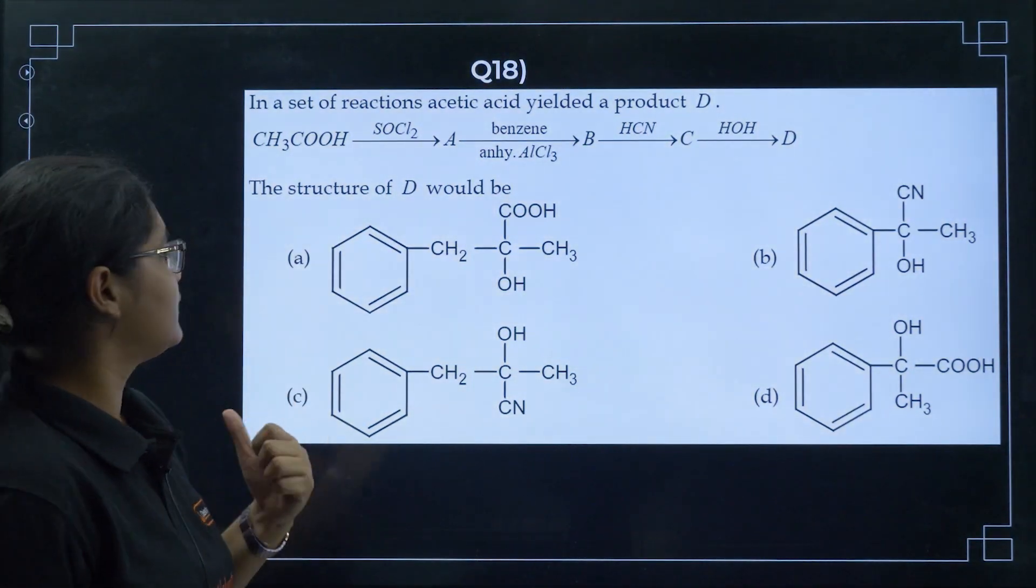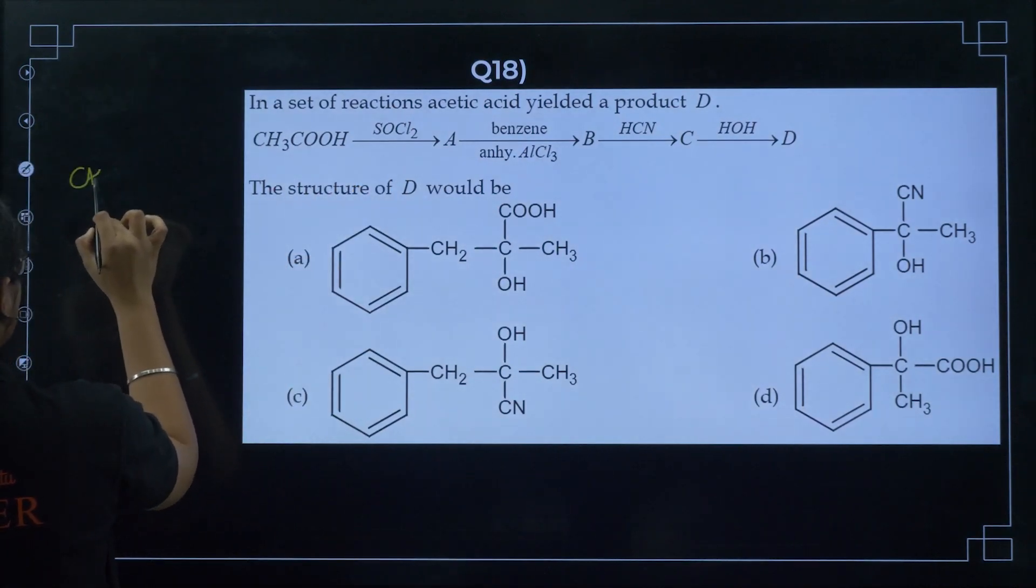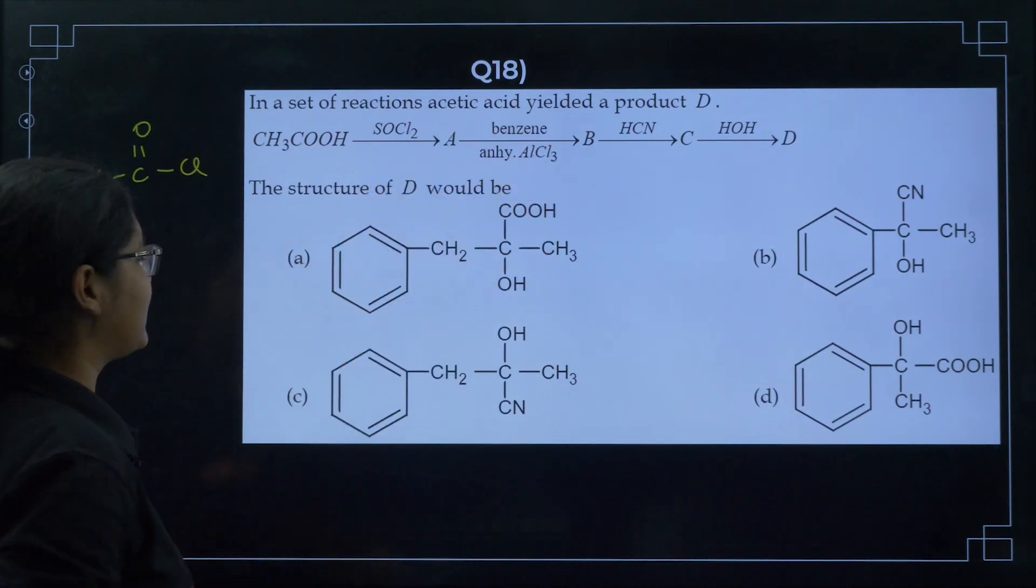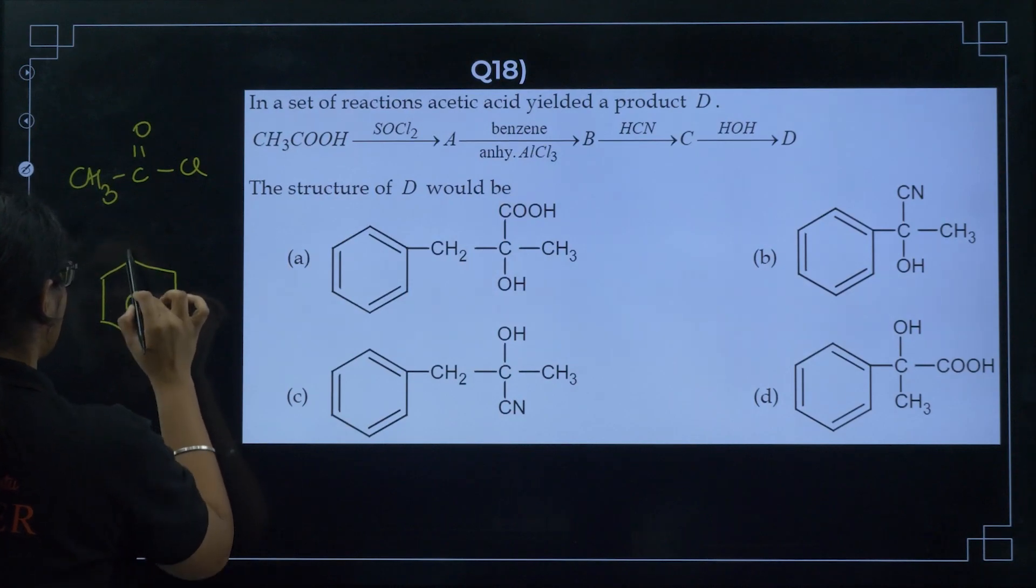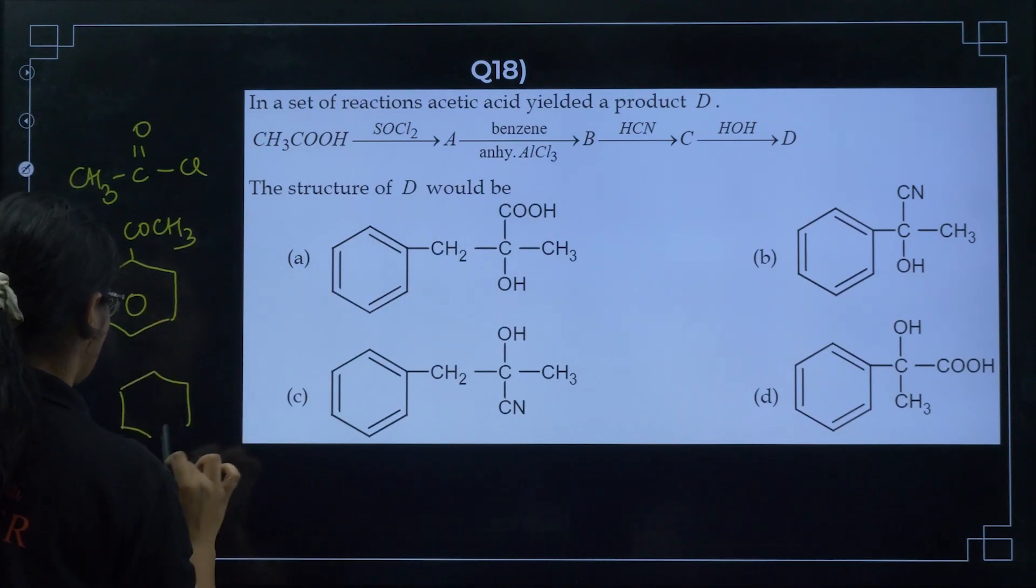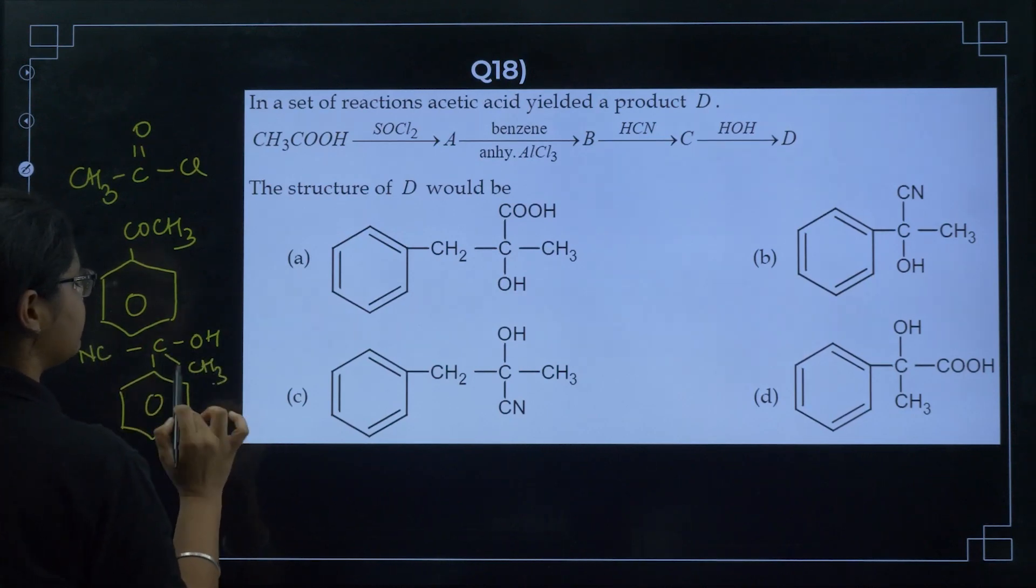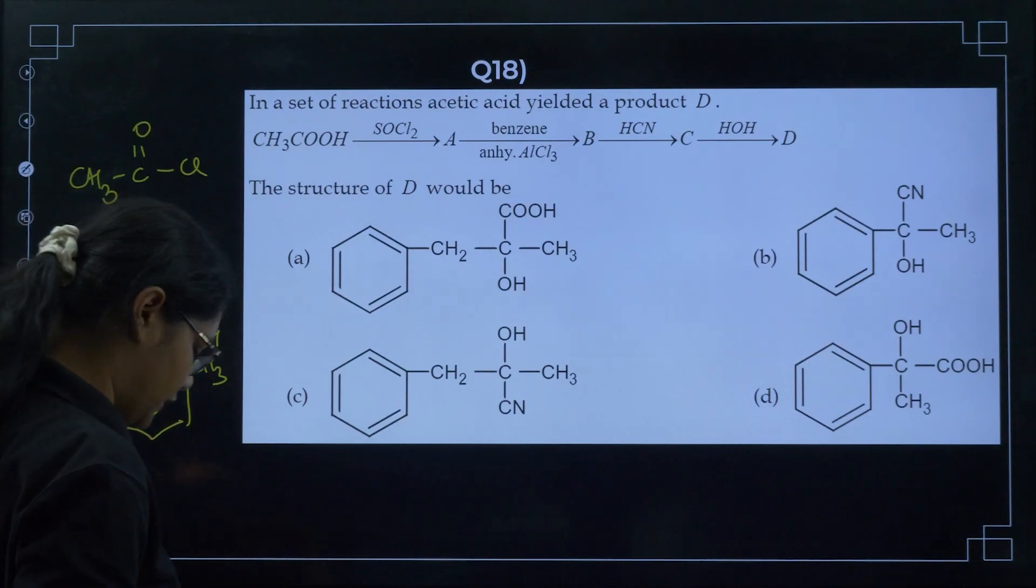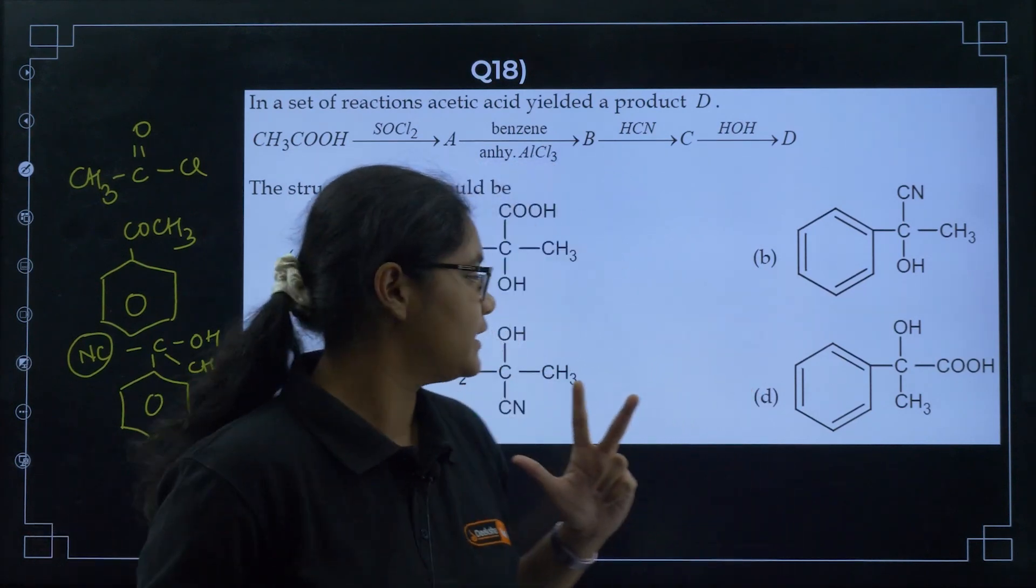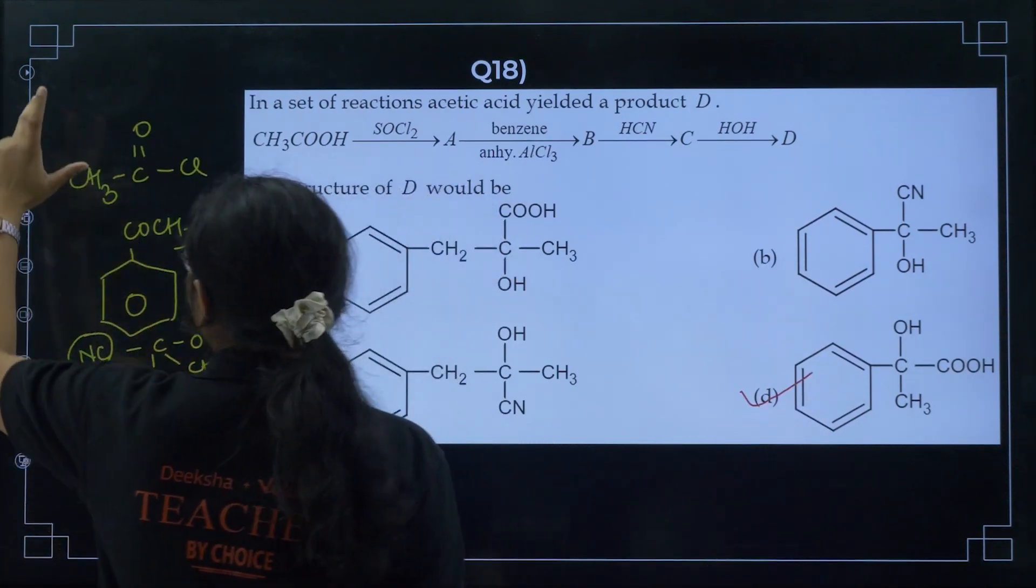Next, you have to find the product here. CH3COOH with SOCl2: A will be what? OH will be replaced with Cl, so I will get CH3COCl. Then benzene with anhydrous AlCl3, Friedel-Craft acylation reaction, so I will get benzene and COCH3. If I do HCN, cyanohydrin, what I will get? COH, CN and this side CH3. With hydrolysis, this CN will get converted to COOH group. So I have one carbon with COOH group, OH and CH3. Three groups are attached. I can find here OH, COOH and CH3. Definitely my answer is option D.